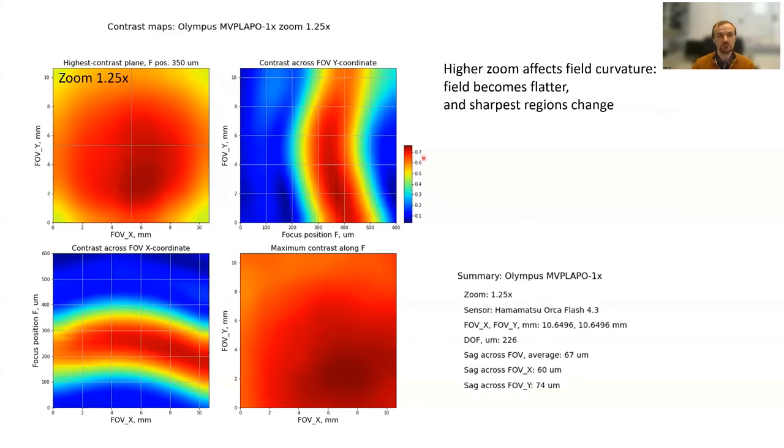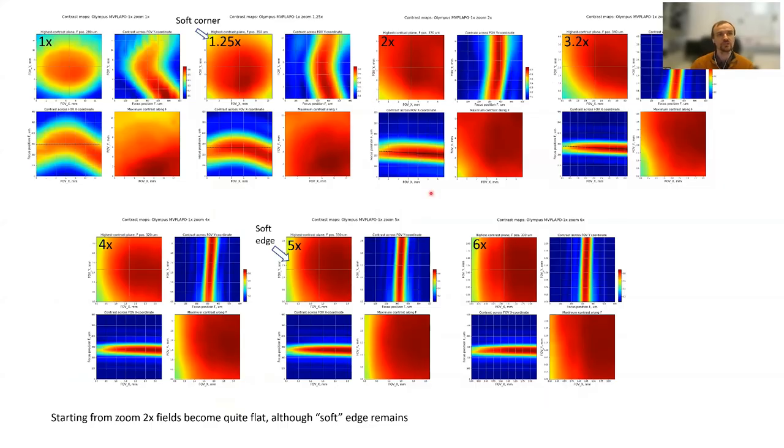You can repeat it for different zooms and compare the zoom settings. This is a comparison table. You can see when you increase the zoom, the field of view becomes flatter. This is 1.25x and this is 3.2x. It is flattest at 6x.